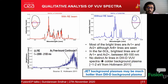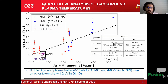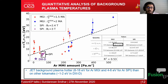Quantitatively, the JET background plasma temperature is between 6 to 18 eV when disruptions are triggered using argon massive gas injection, and 4 to 6 eV when triggered using argon shattered pellet injection. This is much hotter than other tokamaks — for instance, in D3-D the background plasma temperature has been estimated at 1 to 2 eV. This is consistent with our qualitative analysis of the VUV spectra.